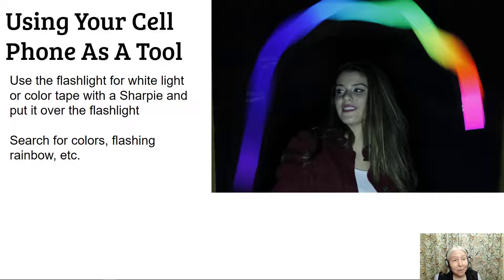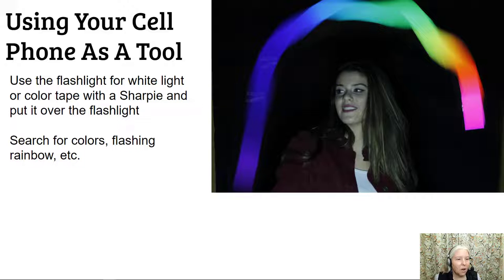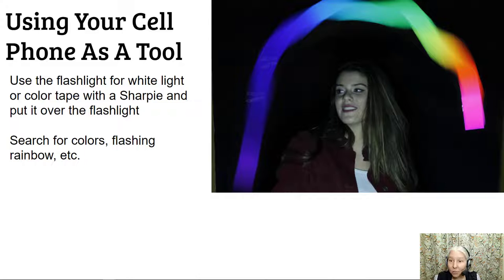Here's a much better way: use your cell phone as a tool. Use the flashlight for white light, or color tape with a Sharpie and put it over the flashlight — that way you can make it a tint of another color. The other thing you can do is search for colors or flashing rainbows in cell phone apps. That's what was used in this photo — someone's cell phone in the background set on a flashing rainbow — and this is the effect that they got, which is pretty cool.